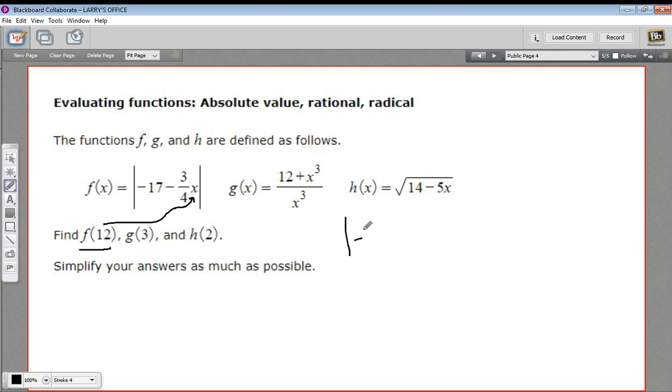So we have the absolute value of negative 17 minus 3 fourths. And in place of x, I'll just put in 12. So times 12. Well, 3 fourths times 12, that's like 12 divided by 4 times 3. So that 12 divided by 4 is 3 times 3 is 9. So this is really the absolute value of negative 17 minus 9 which is the absolute value of negative 26 which is positive 26 because of course the absolute value of a negative number is the positive number. So this is just 26.